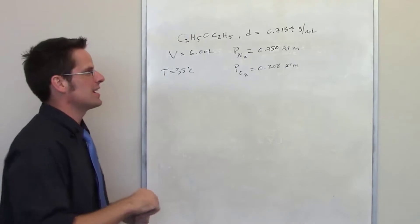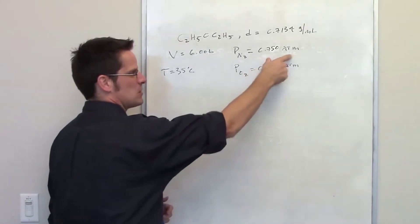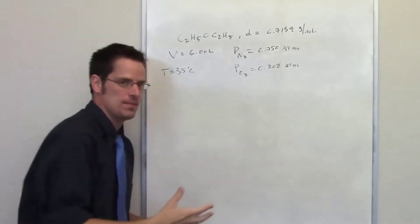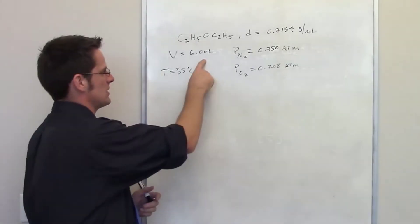In this question we're told that we have a chamber that contains 0.750 atmospheres of nitrogen and 0.208 atmospheres of oxygen. The volume of that chamber is 6 liters.